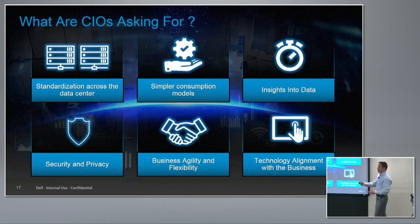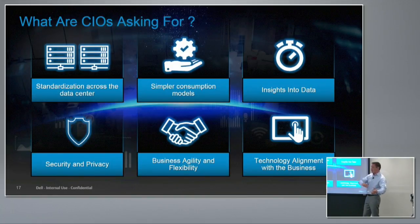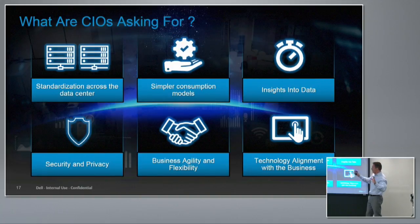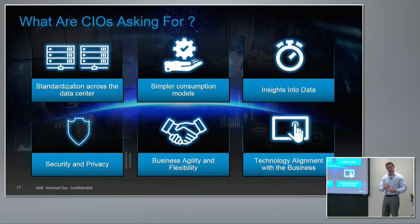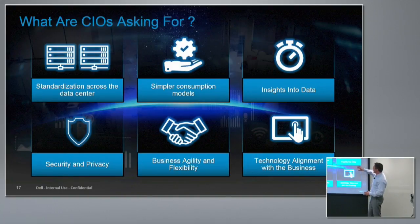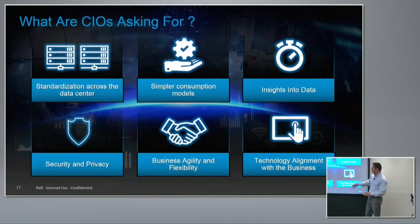CIOs are asking for standardization across the data center — single products that can do it all. Using different combinations of Isilon nodes and feature sets, you can see everything from archive repositories to scientific compute on the same cluster, potentially on different nodes — eliminating islands of storage while running multiple applications on a single cluster for operational efficiency. We also provide simpler consumption models for licensing, and InsideIQ for visibility into what's running in the cluster, along with security and privacy capabilities.